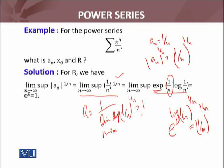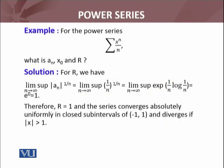So you will be able to write down the interval of convergence. Therefore R = 1, and the series converges absolutely uniformly in the closed subintervals of this open interval and diverges if |x| is greater than 1.